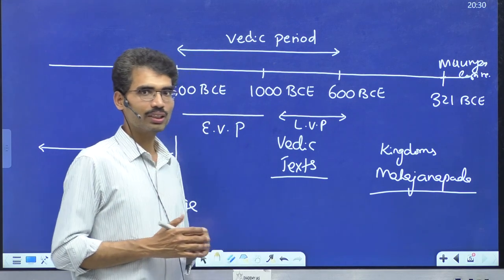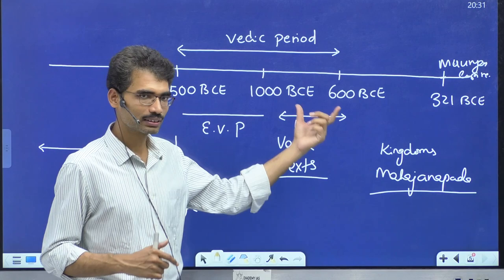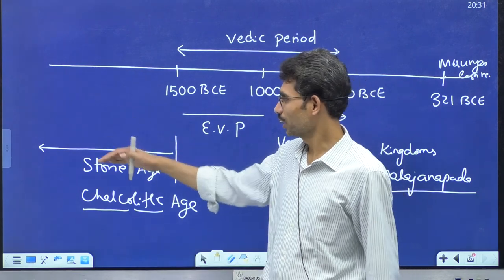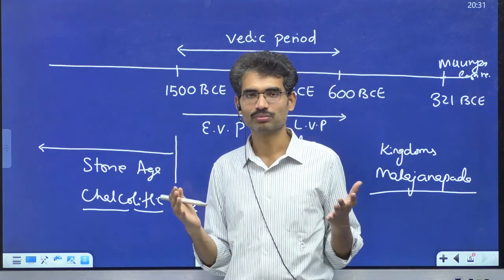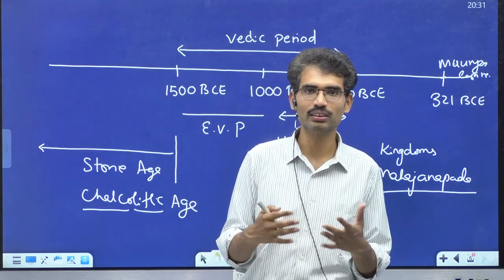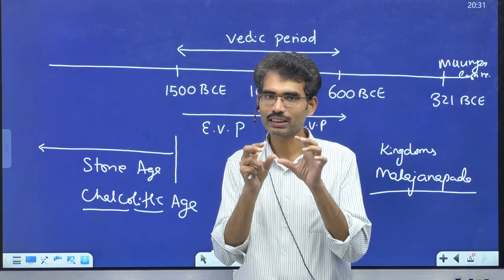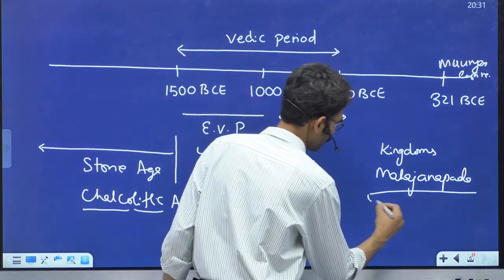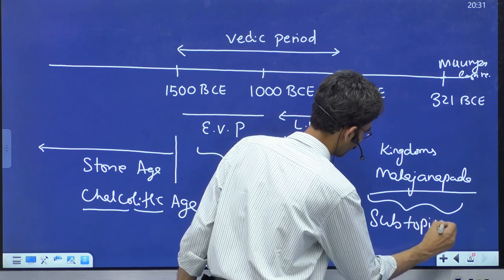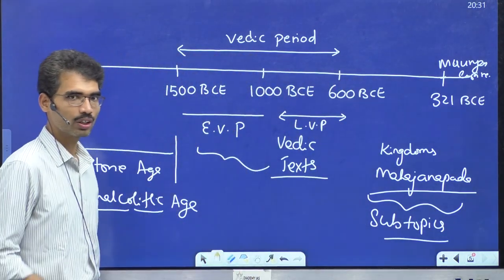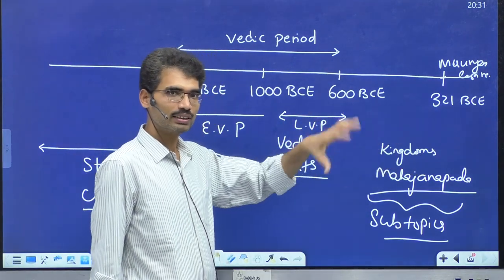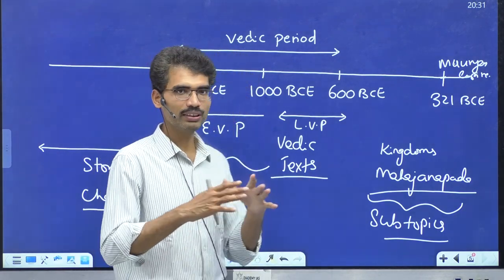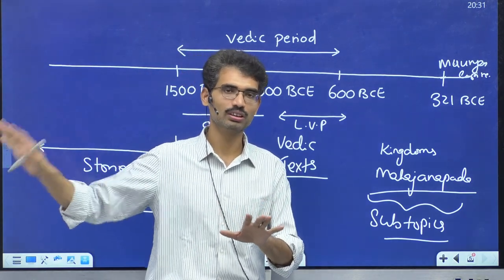This is where the UPSC syllabus is important. If UPSC simply said 'Stone Age, Chalcolithic, Vedic, Mahajanapadas' without further detail, we wouldn't know what dimensions to study. But UPSC very clearly defines subsections — what to study in the Vedic period, what subtopics for Mahajanapadas, what for the Mauryan period. This is one of the advantages of the History Optional syllabus: it clearly gives complete direction on what should and should not be studied.